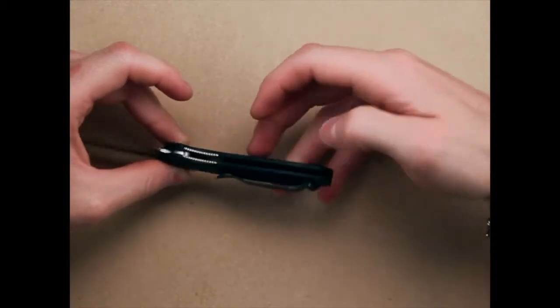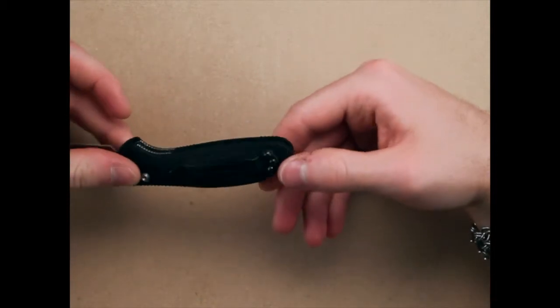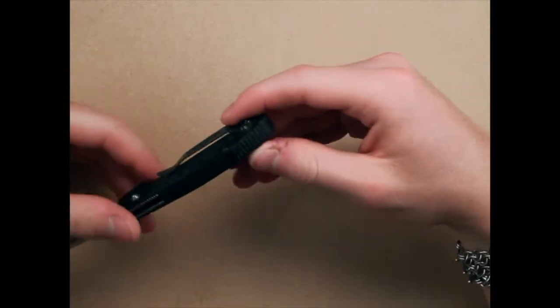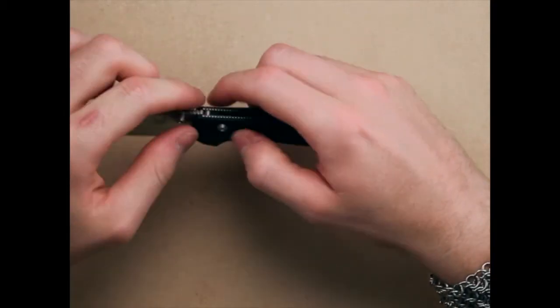There's also some jimping down here in the finger area which adds to the grip, and some texturing here on the Valox handle as well on the top and bottom. So it's kind of got it everywhere, which really gives you a nice firm grip.